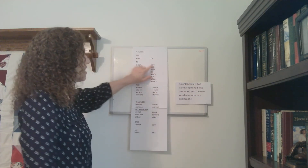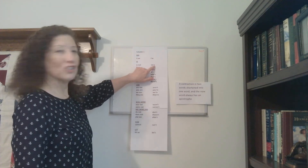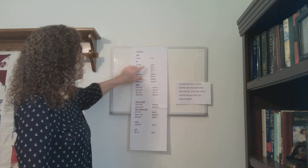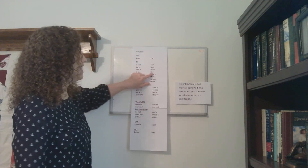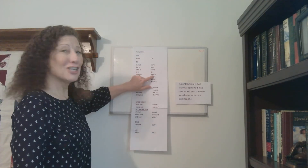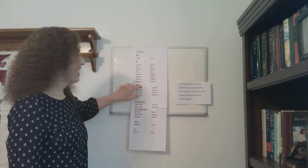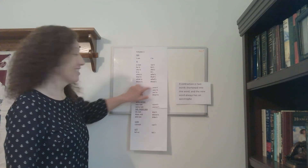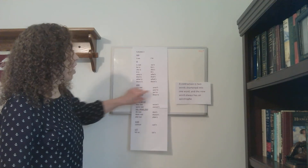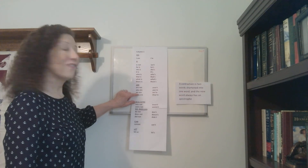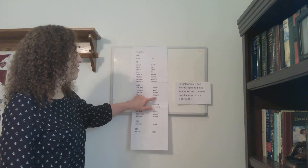He is — he's. She is — she's. It is — it's. Who is — who's. That is — that's. What is — what's. There is — there's. Are: are not — aren't. You are — you're. These are different ways we would use the word are. We are — we're. They are — they're.